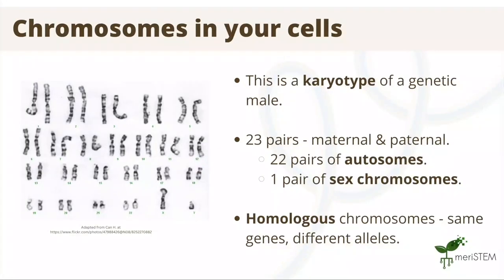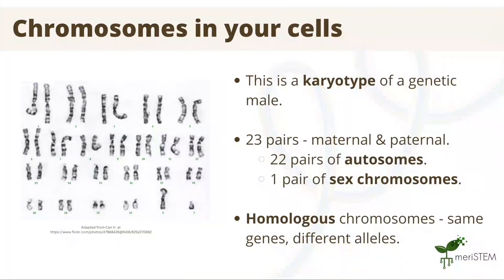The image seen here is a karyotype, which is the set of 46 chromosomes found within most of your cells in the body. As you can see, there are 23 pairs of these chromosomes, because you get 23 from the maternal side and 23 from the paternal side. Each pair of chromosomes is known as a homologous pair. Note that 44 of these chromosomes are autosomal, and two are your sex chromosomes, which determine an individual's genetic sex. This is a karyotype of a genetic male, as we have an X and a Y chromosome.